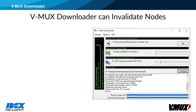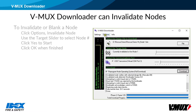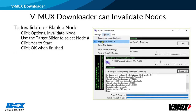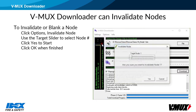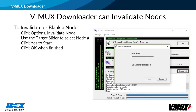Downloader can also be used to invalidate a node. Click Options, then Invalidate node, and set the target node slider to the node number you wish to invalidate. In this example we will choose node 1. Click Yes to start. Once complete, you will see node 1 successfully invalidated. Click OK to exit.